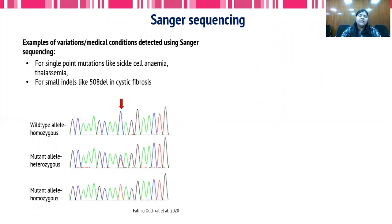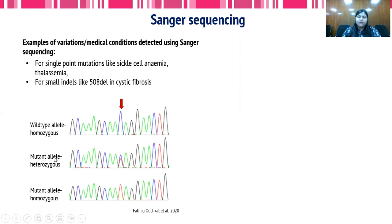Sanger sequencing is commonly used for detecting single point mutations, like in case of sickle cell anemia and thalassemia, and also for small indels, like the specific deletion at position 508 in cystic fibrosis. In the representative image, the wild-type allele shows a single peak indicating a homozygous individual, a heterozygous mutant allele shows two different peaks, and a homozygous mutant allele shows a different colored but single peak.